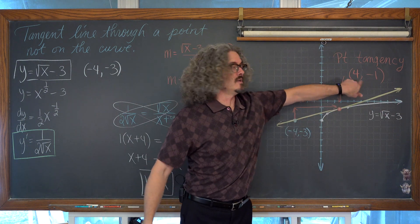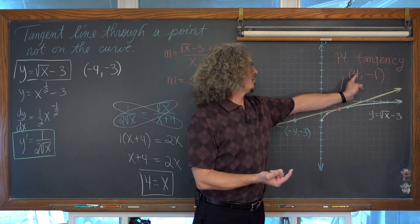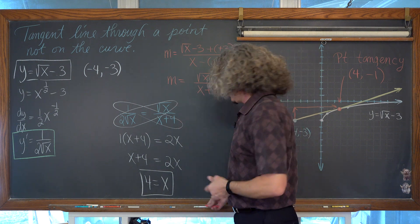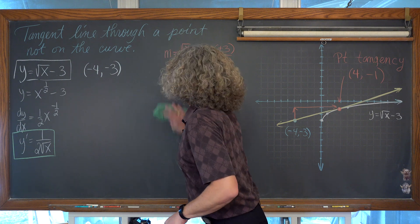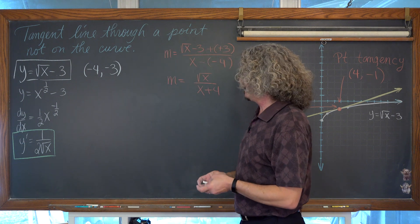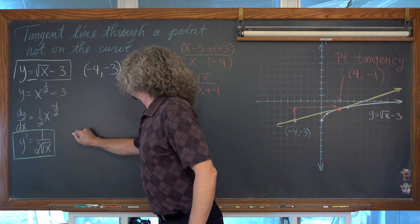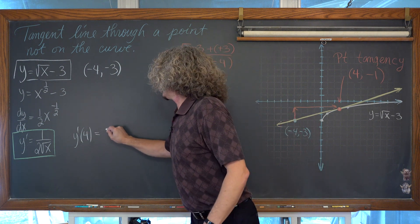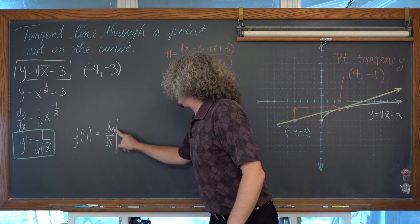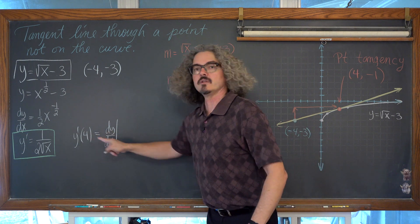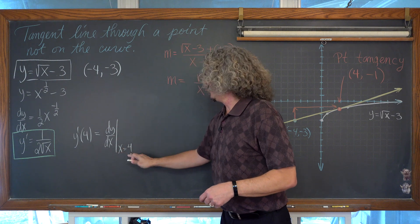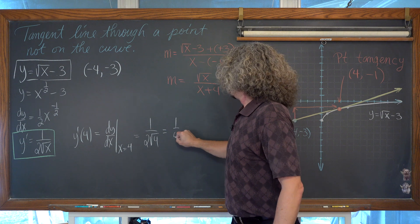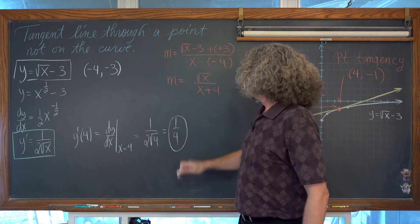Now that I have my point of tangency, I can use either (-4, -3) or (4, -1) to write the equation of the tangent line. But we do need a slope, and since we are learning calculus we will use the derivative function. So y prime of 4 — or dy/dx evaluated at x = 4 — is 1 / (2 times the square root of 4) = 1 / (2 times 2) = 1/4. Now we have a slope, m = 1/4.